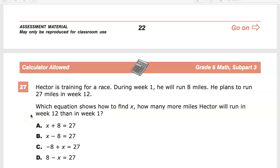Hector's training for a race. During week one he will run eight miles. He plans to run 27 miles in week 12. Which equation shows how to find x, how many more miles Hector will run in week 12 than in week one? Now the big key phrase here is how many more. This indicates that there's a difference between them.